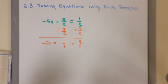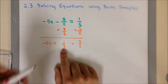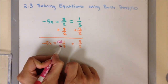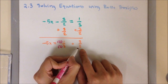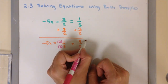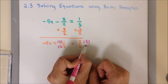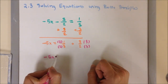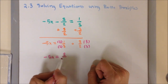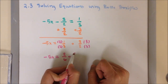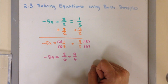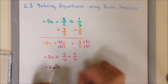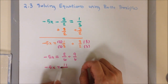In our first fraction, 1/3, to change the 3 into 6, I am going to multiply top and bottom by 2. In our second fraction, to change 2 into 6, I am going to multiply top and bottom by 3. So I am going to have negative 5x equals 2/6 plus 9/6, which becomes negative 5x equals 11 over 6.